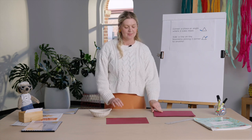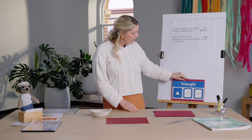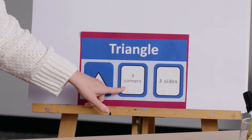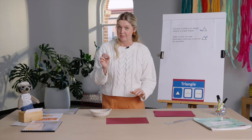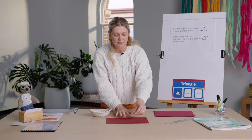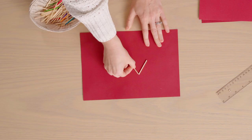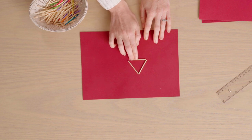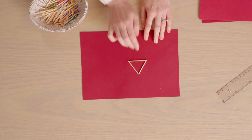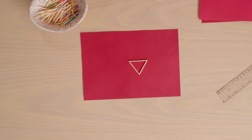Now I'm going to have a go at making some shapes using these matchsticks. The first shape I am going to make is a triangle. We know that triangles have three corners and three sides, so each matchstick is going to be one side. One, two, and three. Let's check — three corners and three sides. It's a triangle.